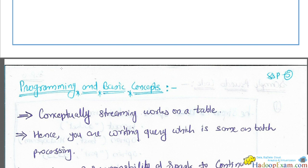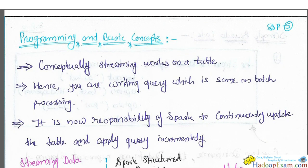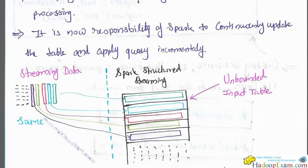Conceptually, Structured Streaming works on a table. Whether you use the input as an input table or finally as a result table — we have seen this. I'll take you through the input table and result table. The query you write is the same as batch processing. When you read the data that would be slightly different code, and writing the data — the source and sink code — would be different. But in between, whatever transformation you do, you can use the same code for both static and streaming data. It is now Spark's responsibility to continuously update the table and apply the query incrementally.